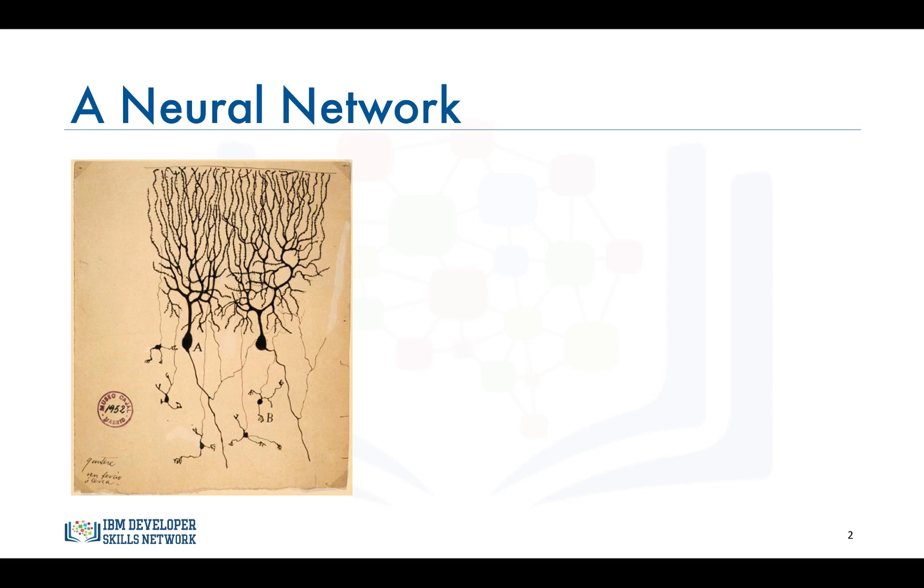But based on his drawing, the neurons, one of them labeled A, have big bodies in the middle and long arms that stretch out and branch off to connect with other neurons.